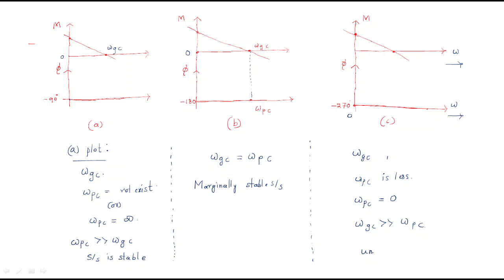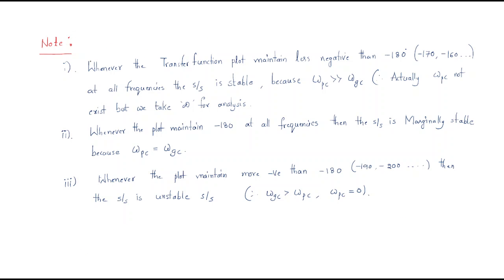Since the gain crossover frequency is much greater than the phase crossover frequency, the system is unstable. In examinations, problems like this are given to create confusion. Just carefully identify where the gain crossover frequency and phase crossover frequency are, follow the rules, and you will easily understand the problem.